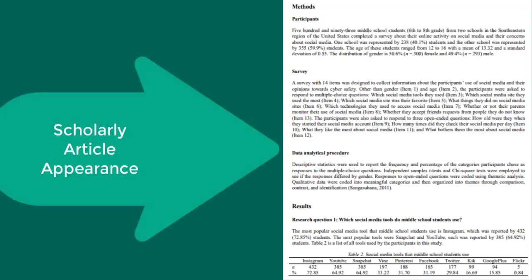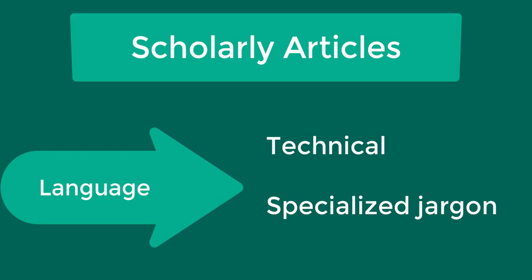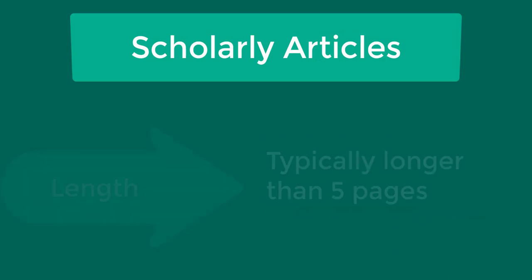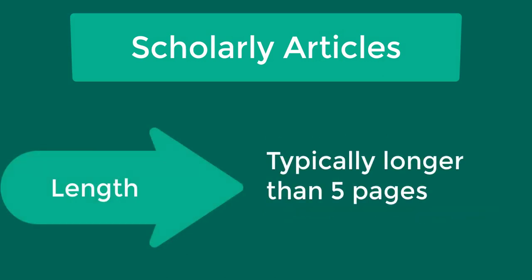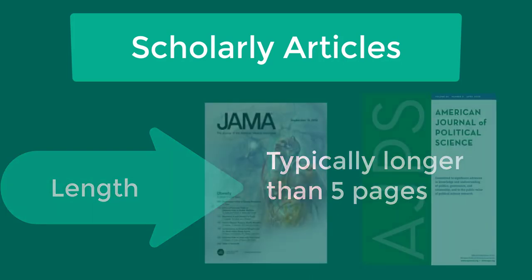In terms of the appearance of these articles, they are mostly text with some tables and charts. There are few graphics or illustrations unless they are relevant to the article, and there are also no advertisements. The language of academic articles is technical and uses the specialized jargon of the field. Peer-reviewed articles are usually longer than popular articles and are typically over five pages in length.